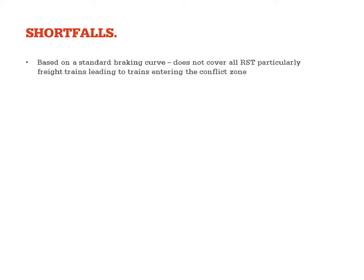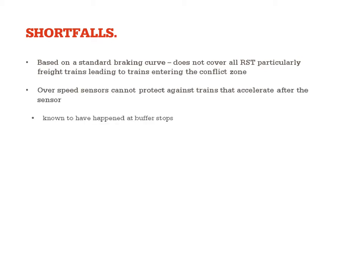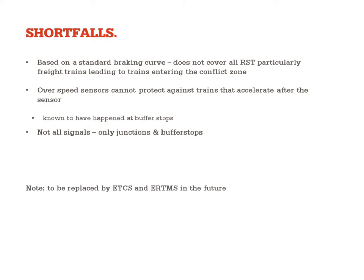There are a number of shortfalls in the TPWS system. It's based on a standard braking curve, which means it doesn't cover all rolling stock — particularly freight trains with lower braking capacity — and that can lead to trains still entering the conflict zone. Overspeed sensors cannot protect against trains that accelerate after the sensor, which is known to have happened at buffer stops, and not all signals have TPWS — it's really only at junctions and buffer stops. This system is to be replaced in the future with ETCS, the European Train Control System, which is similar to ATP: it supervises the train, provides the speed profile, and intervenes if the driver is going above the permitted speed.